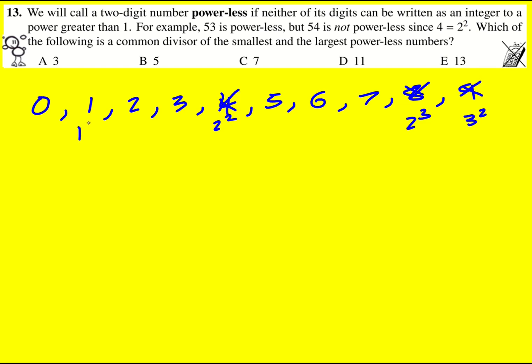In fact one could be written as one to the power of four for example. So that one's out and zero is zero to the power of four.